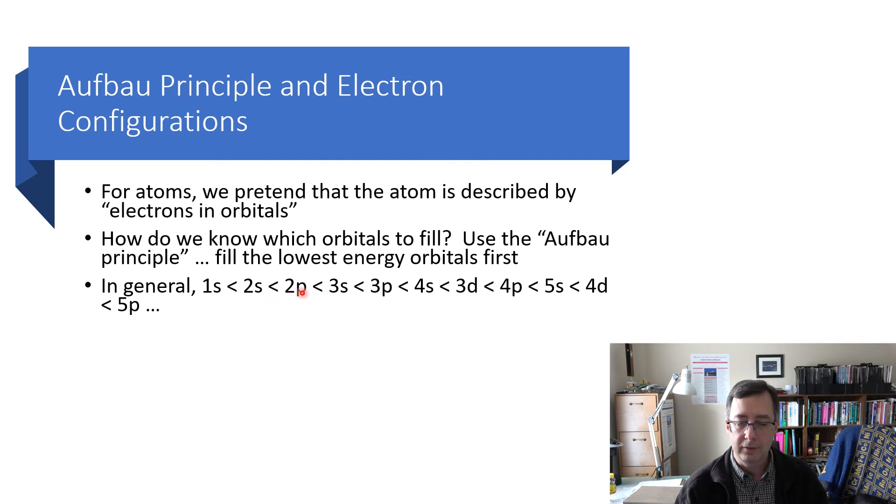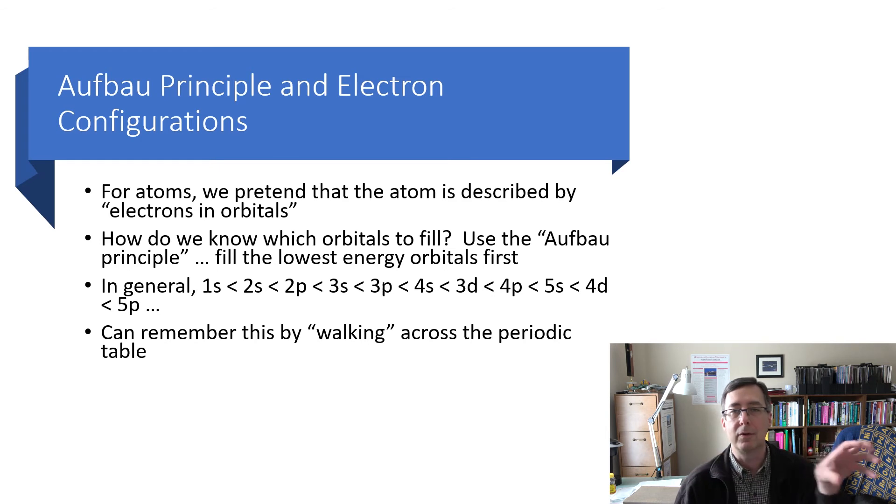Well, you use the aufbau principle, which is German for filling up principle. You fill up the orbitals starting with the lowest energy ones first. And in general, the energies of the orbitals go like this. 1s is less than 2s, is less than 2p, is less than 3s, is less than 3p, is less than 4s, is less than 3d. So we skipped our principal quantum number here. I had a 4 and then I went back to 3. And then I go back to 4. 4p, then to 5s, then to 4d, then to 5p, et cetera. Eventually get to f's when you talk about lanthanides and actinides.